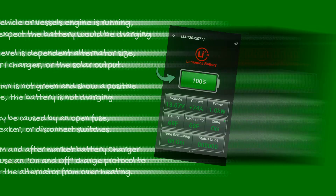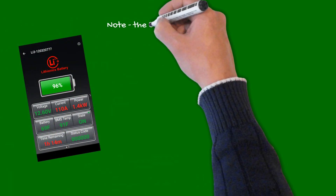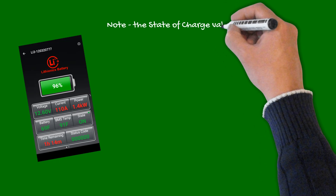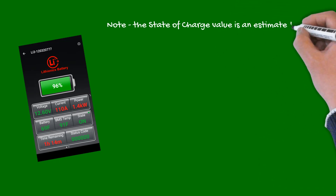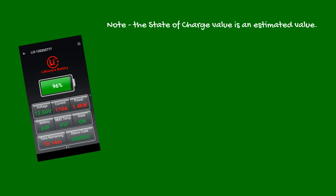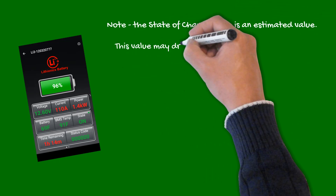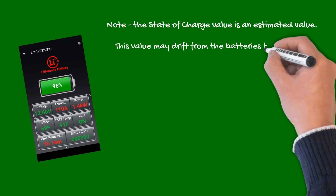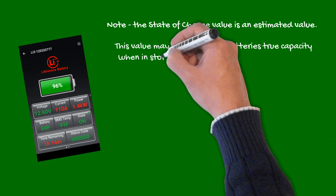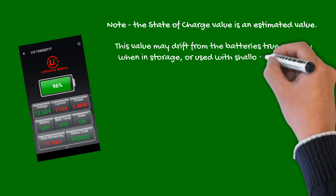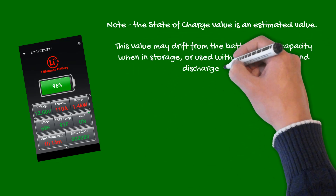Please note the state of charge value is an estimated value. Over time this value may drift from the battery's true capacity. This is especially true when the battery has been in storage or used with shallow charge and discharge cycles.